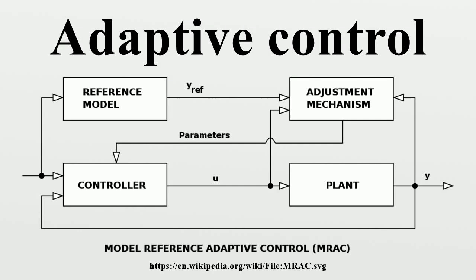Adaptive control is the control method used by a controller which must adapt to a controlled system with parameters which vary or are initially uncertain. For example, as an aircraft flies, its mass will slowly decrease as a result of fuel consumption. A control law is needed that adapts itself to such changing conditions.